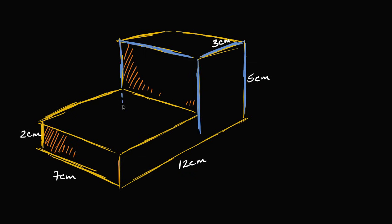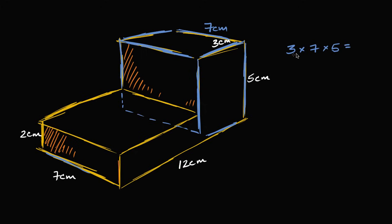If this part were transparent, you would see it looks just like this. So this prism is three centimeters wide, seven centimeters long — this distance here is the same as this distance over here. Width times length times height: three times seven is 21, times five equals 105. We could say 105 cubic centimeters, because you have centimeters times centimeters times centimeters.